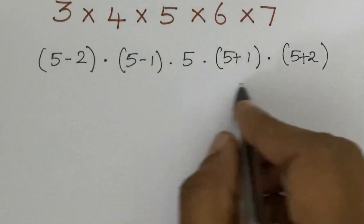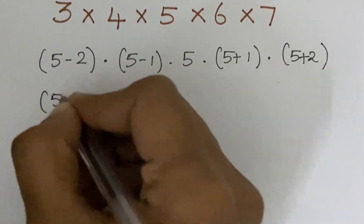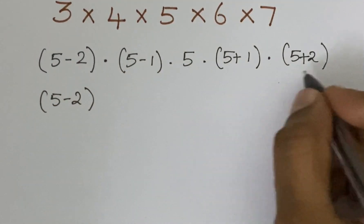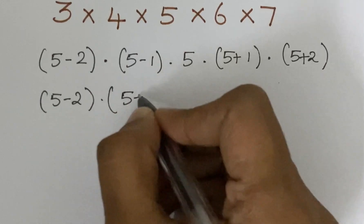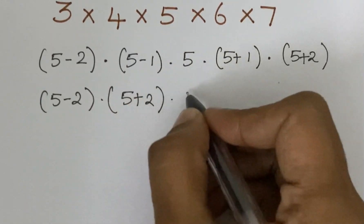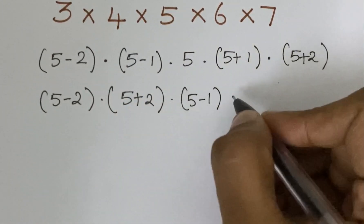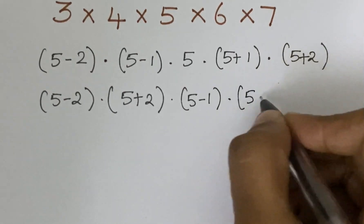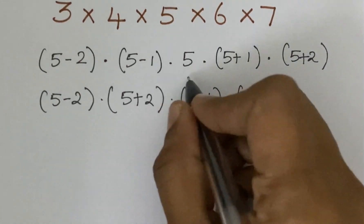We group the similar terms: 5 minus 2 times 5 plus 2, times 5 minus 1 times 5 plus 1, times 5.